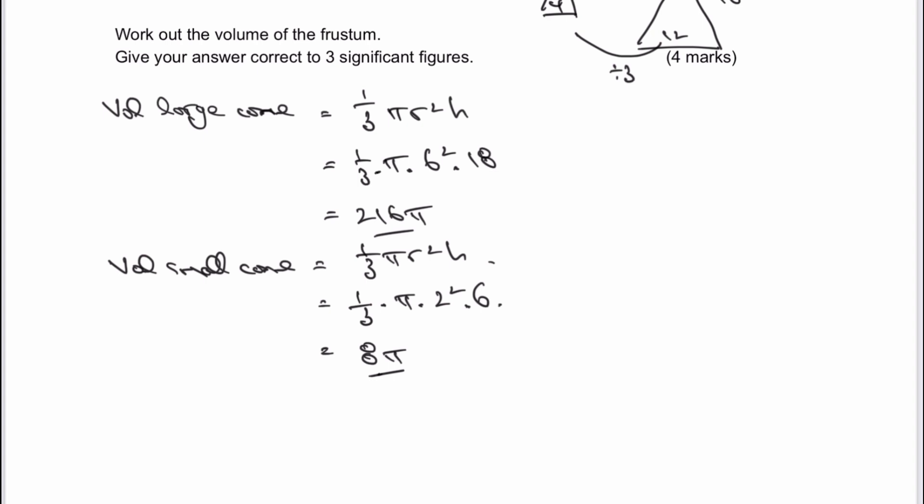To work out the volume of the frustum, take one away from the other. The volume is 216π minus 8π, which gives us 208π.